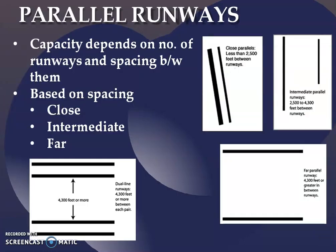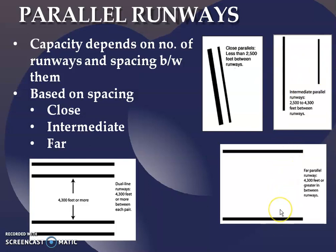Coming to the parallel runway, the two runways are running parallel to each other and the spacing between them is maintained constant. In this figure, it shows that the distance between them is 2500 feet. An intermediate parallel runway will run between these two runways. This is a far parallel runway because the distance between them is 4300 feet. This is a dual line runway — here one pair and here one pair — the distance between the two pairs of parallel runway is 4300 feet.